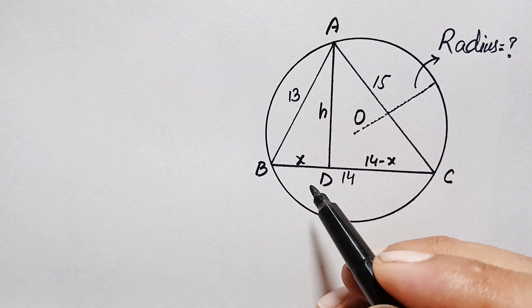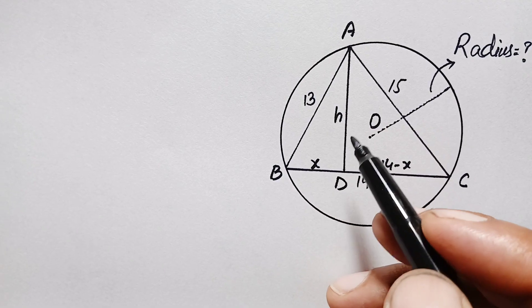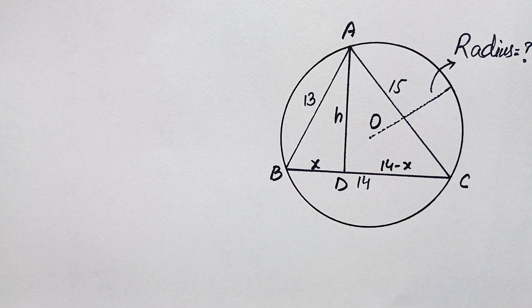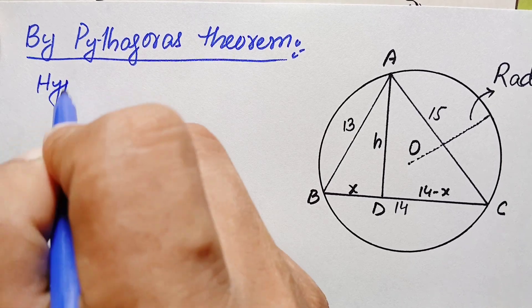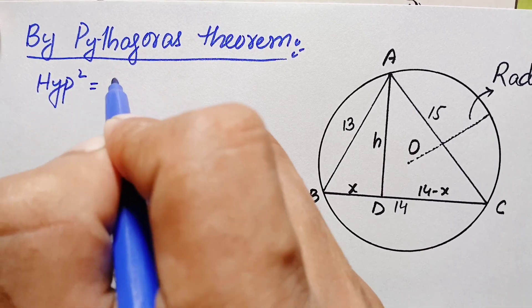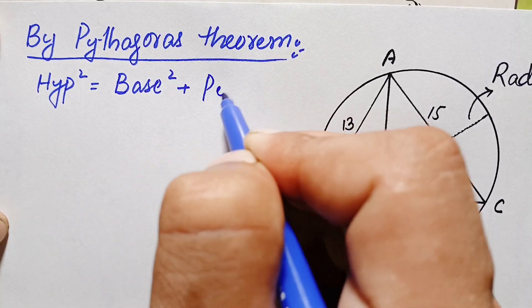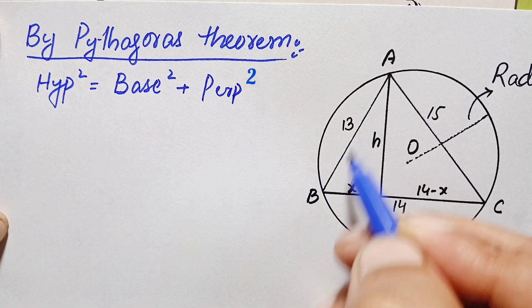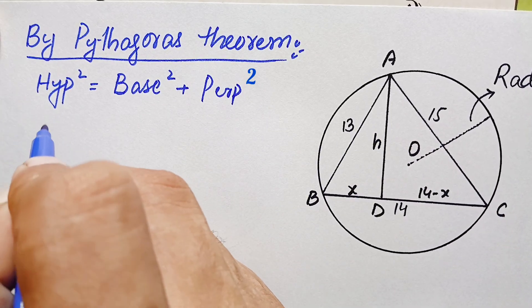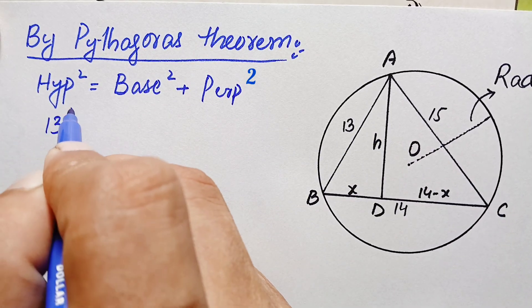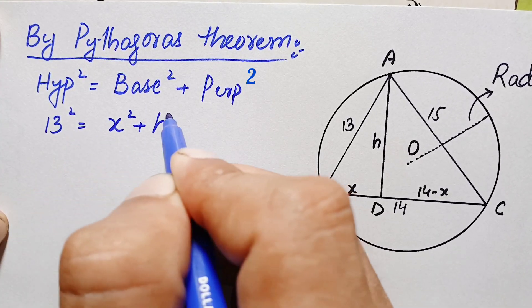Using the Pythagorean theorem in triangle ABD, which states that the hypotenuse square is equal to base square plus perpendicular square. Here our hypotenuse is 13, base is x, and perpendicular is h. So this becomes: 13² = x² + h².